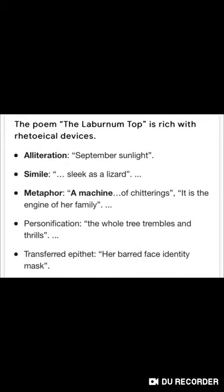Poetic devices in the poem — Alliteration: 'September sunlight' — repetition of the 'S' sound. Simile: 'sleek as a lizard.' Metaphor: 'a machine of chitterings,' 'engine of family' — direct comparison, that's why metaphor. Personification: 'the whole tree trembles and thrills.' Transferred epithet: 'the barred face identity mask' — barred face is used in identity mask, यहाँ transferred epithet है. Students, I hope you understood.